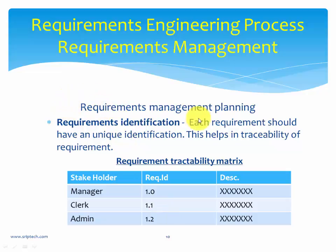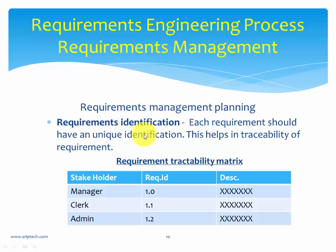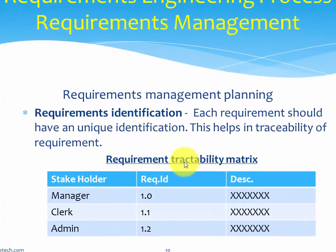There is a concept called requirements management planning — it is about managing and planning your requirements. It consists of a few stages. The first one is requirements identification. Any system will have many stakeholders, each giving any number of requirements. All those requirements have to be documented. When we document all requirements and put them in a proper format, we generate something called a requirement traceability matrix, which contains columns for stakeholder, requirement ID, and description.